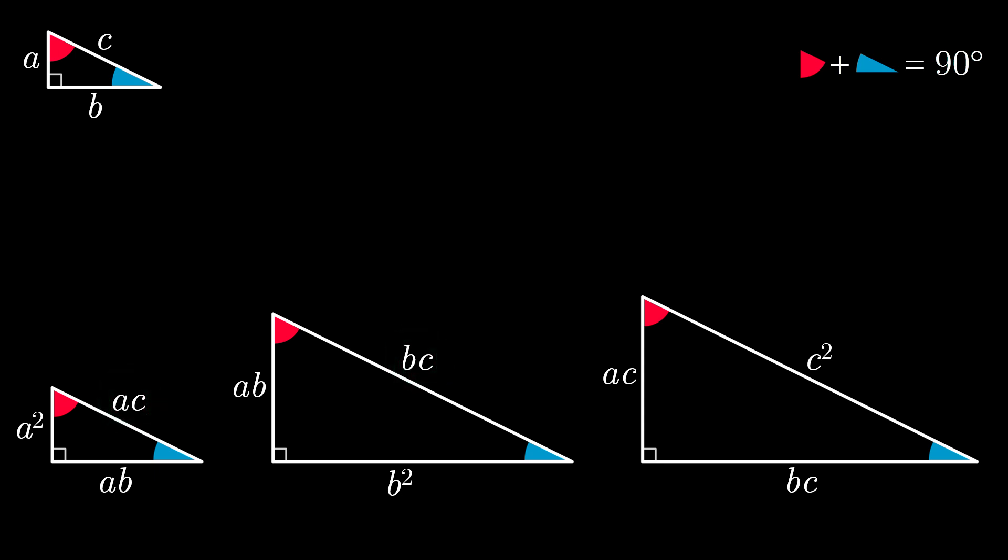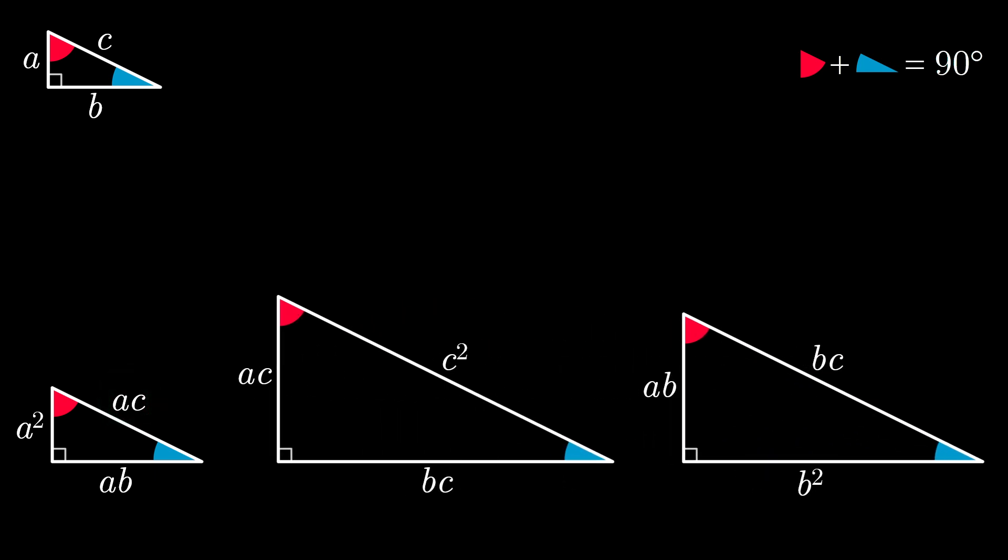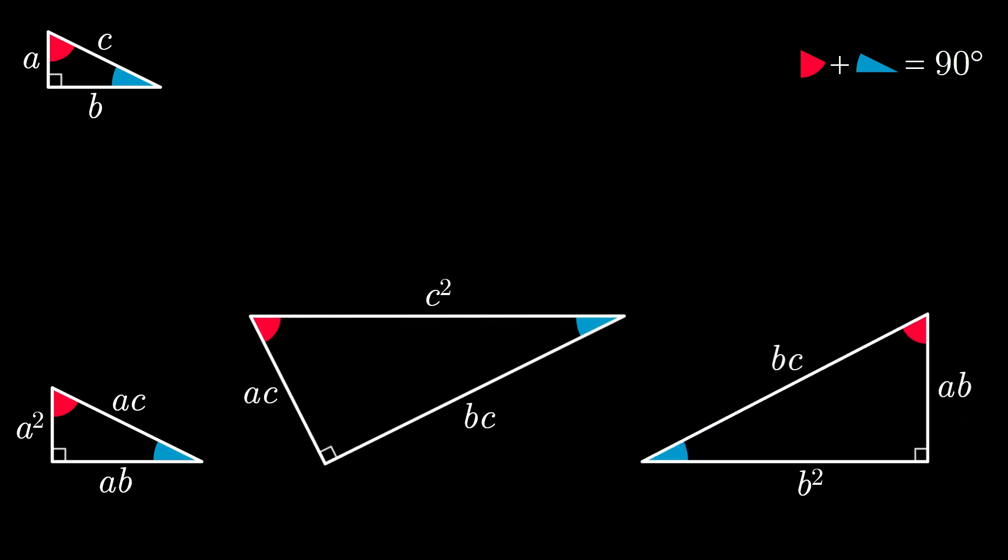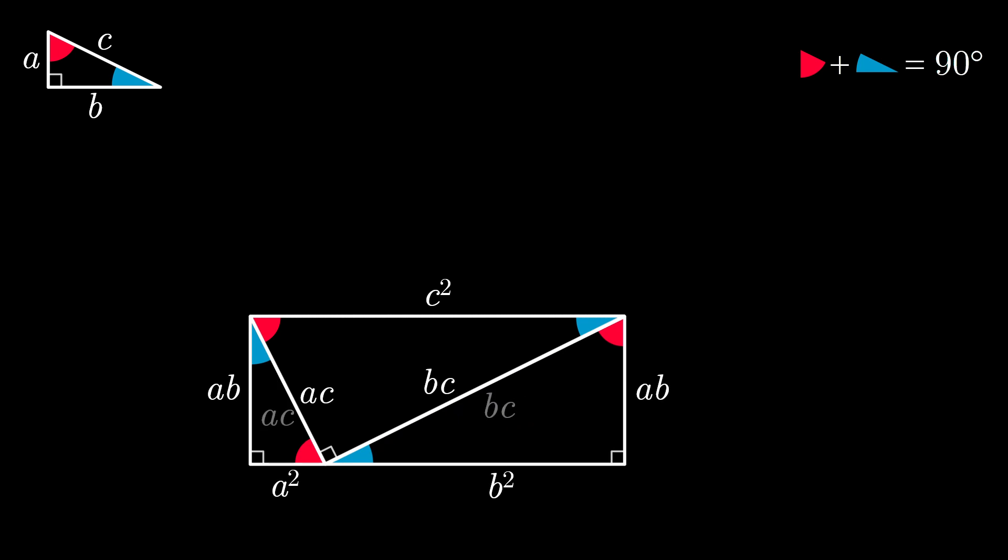As a result, we can perform a series of translations, rotations, and reflections on the three scaled triangles to create what appears to be a rectangle.